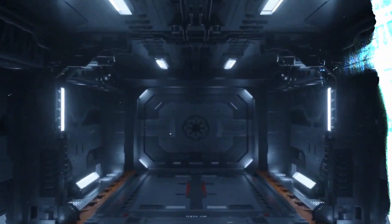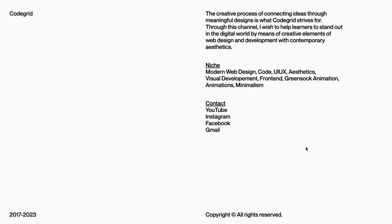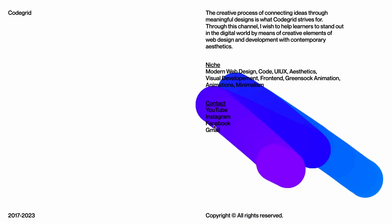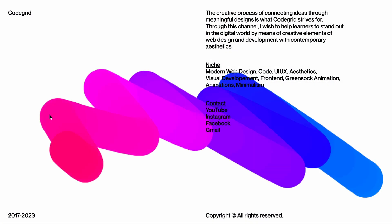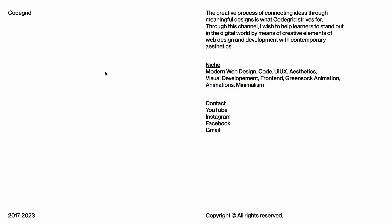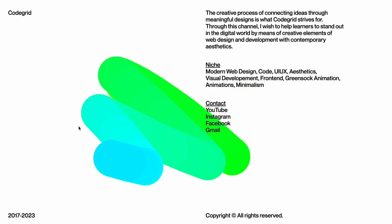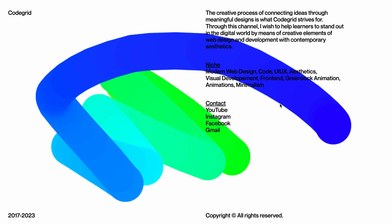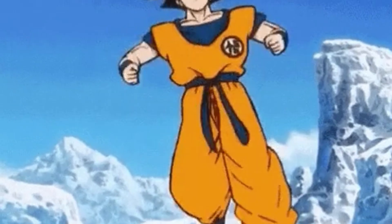Hey there fellow coders, welcome back to CodeGrid. Get ready to unleash your inner Picasso as we dive into today's tutorial on using canvas to create this epic paint stroke effect. No need for fancy brushes or messy paint — we'll be doing it all digitally with vanilla JavaScript. So grab your favorite coding beverage and let's brush up on our canvas skills. No time to waste, let's get artsy right away.